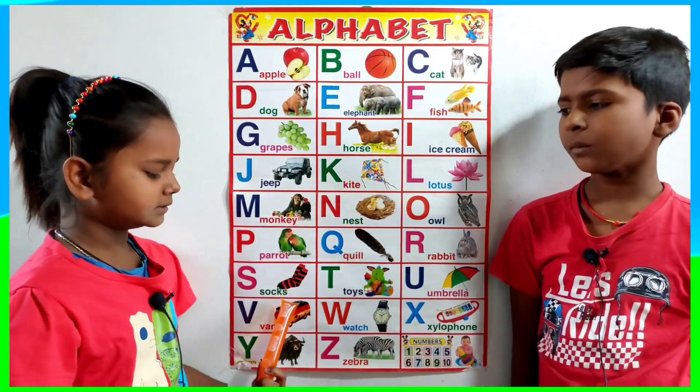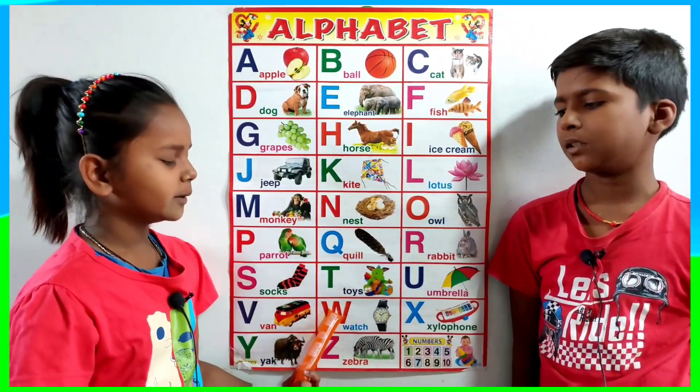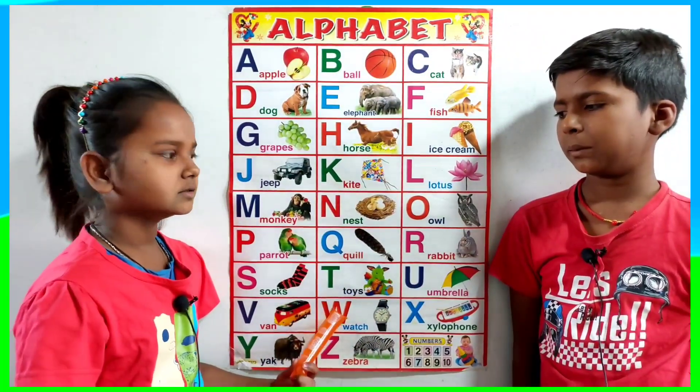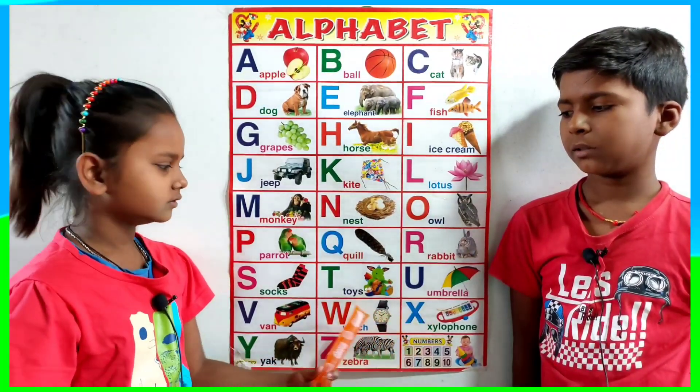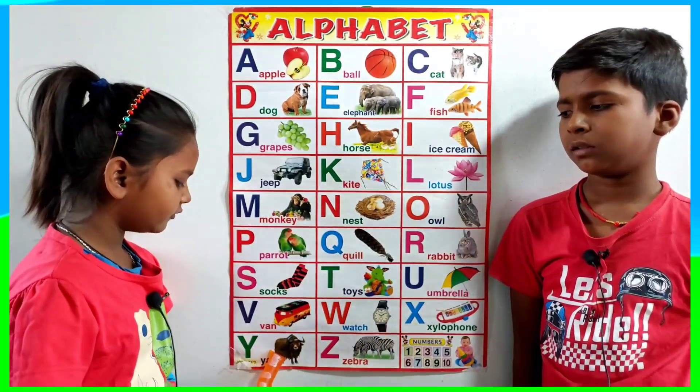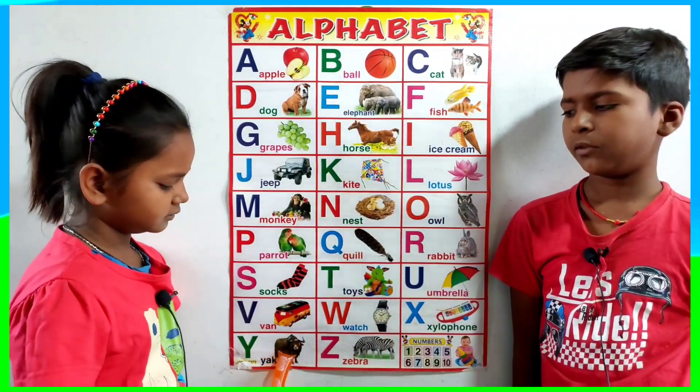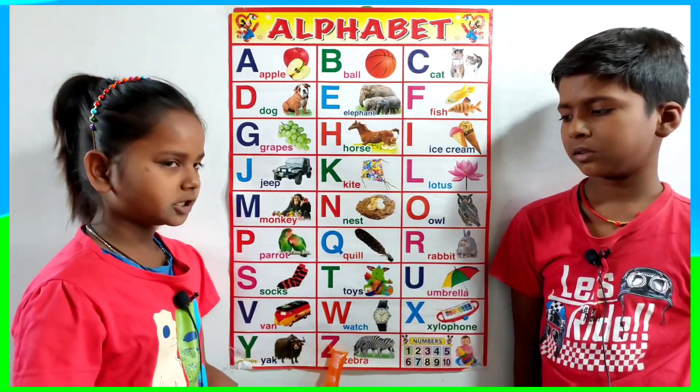V for van, W for watch, X for xylophone, Y for yak, Z for zebra.